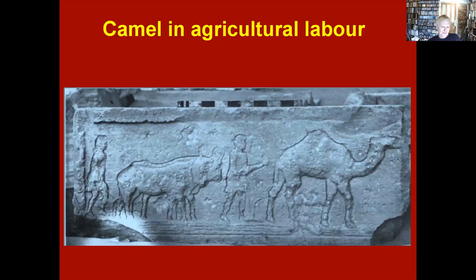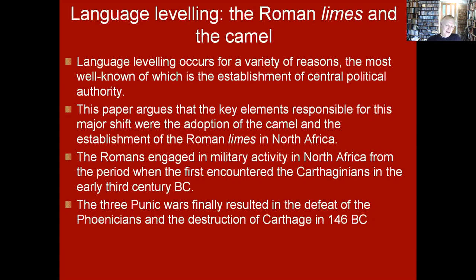The key part of my argument concerns the introduction of the camel. The camel spread along the North African coast between 50 and 100 AD. The Romans quickly adopted it for fast military movement, and it also became integrated into the agricultural system — camels are very strong and we see representations of them being used in this way. Together with the camel, the establishment of the Roman limes is identified as the key element responsible for this major language levelling. The Romans engaged in military activity in North Africa from the early third century BC.